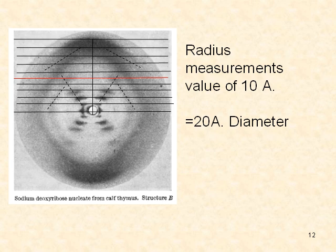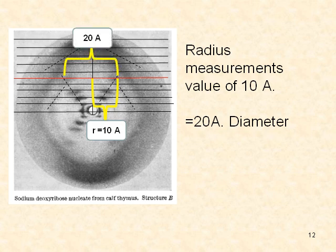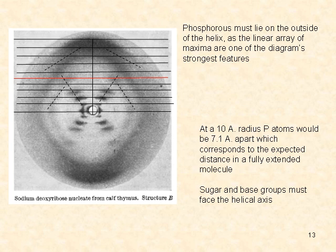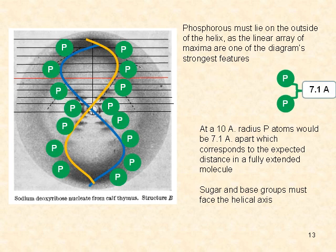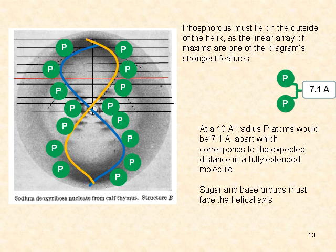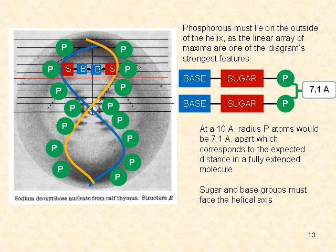Second, radius measurements of several layer lines have a value of 10 angstroms, which gives a diameter of 20 angstroms. Third, phosphorus atoms must lie on the outside of the helix, as the linear array of maxima is one of the diagram's strong features. If there are 10 phosphorus atoms at 10 angstroms, the distance between each phosphorus atom is 7.1 angstroms, which corresponds to the expected distance in a fully extended molecule. Sugar and base groups must fit along the helical axis.